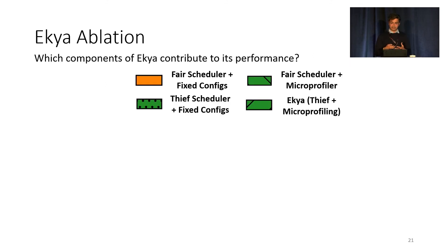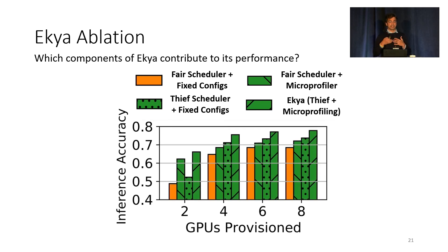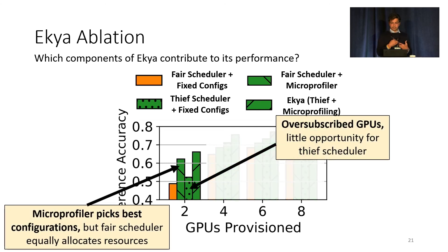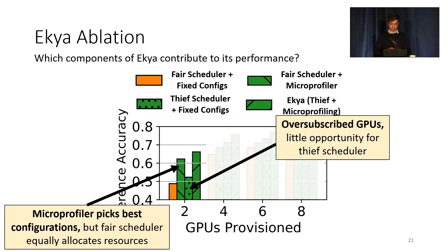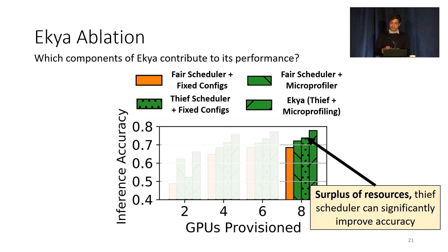We also do an ablation study to analyze how much configuration selection and resource allocation individually affect IKEA's performance. We compare four variants with varying GPU counts: a fair scheduler with fixed configuration (baseline), adding the microprofiler with a fair scheduler, using the T-scheduler with fixed configurations, and finally full IKEA combining the T-scheduler with the microprofiler. When only two GPUs are provisioned, resources are oversubscribed and the T-scheduler alone is not helpful since expensive fixed configurations take too long. The microprofiler improves accuracy by picking the best configuration. However, as more GPUs are provisioned, the T-scheduler can redirect surplus resources, achieving higher accuracy than the microprofiler alone.